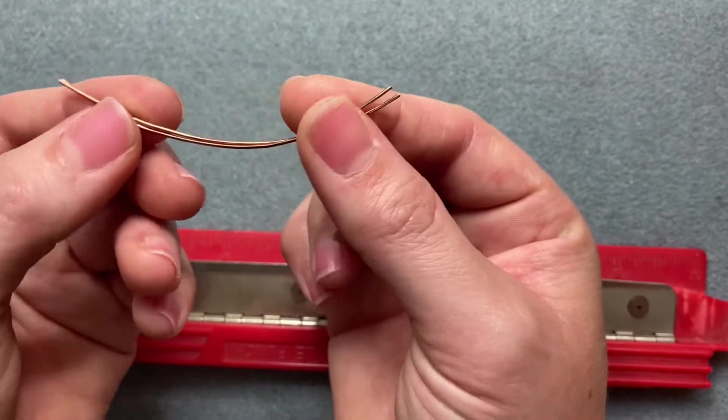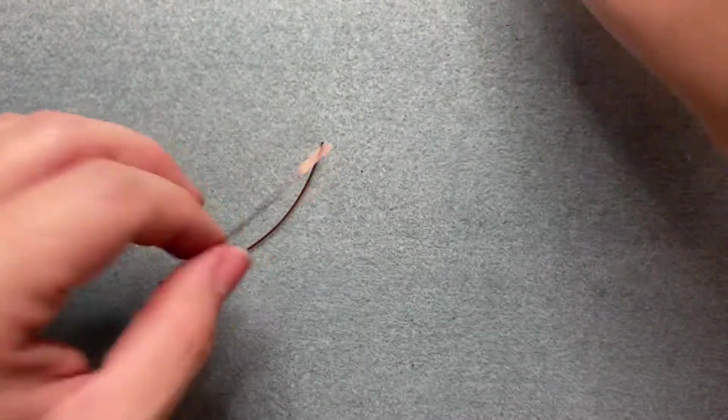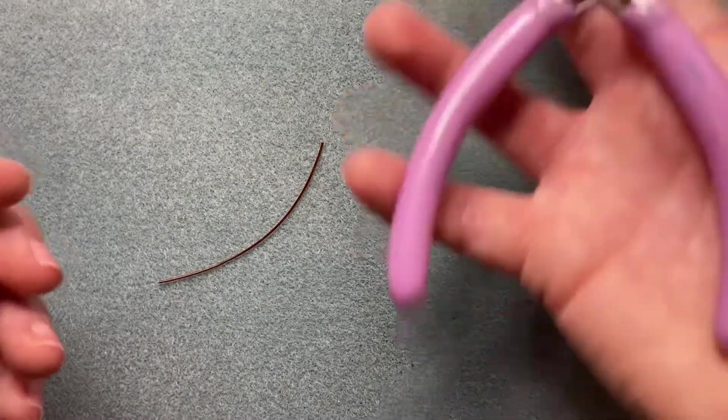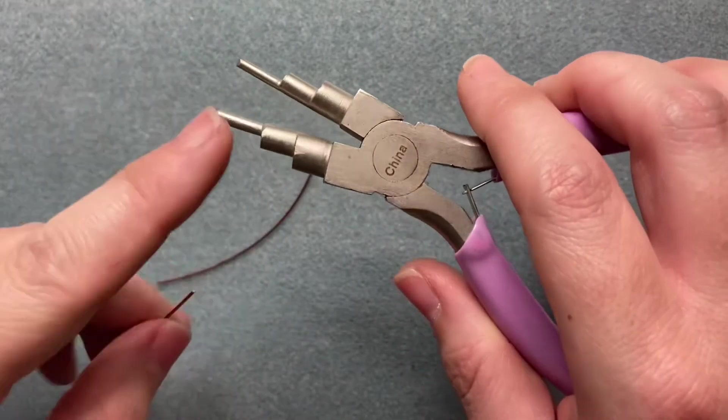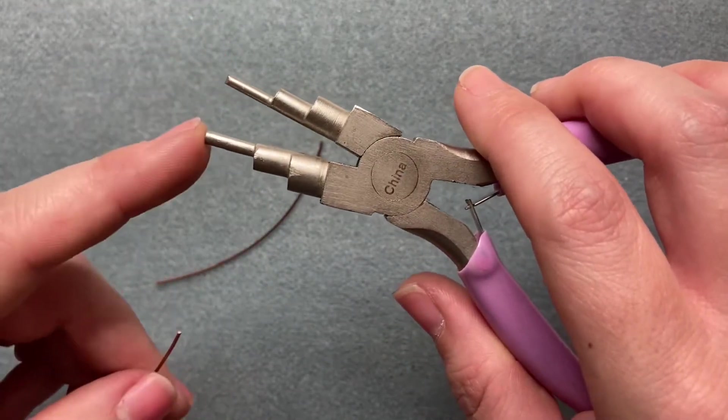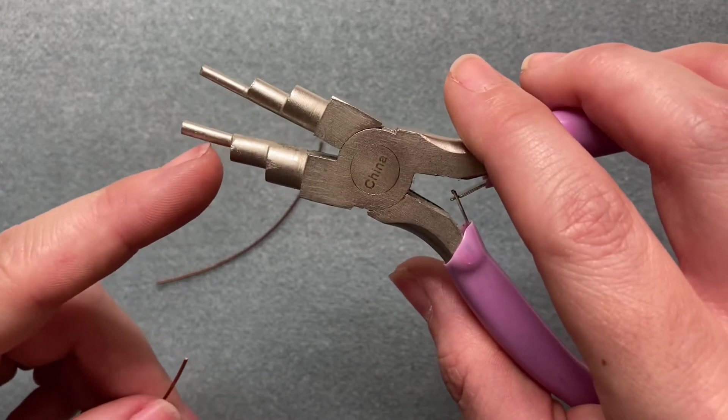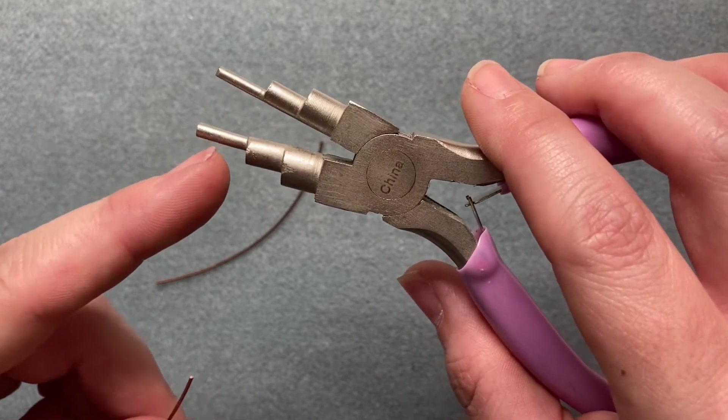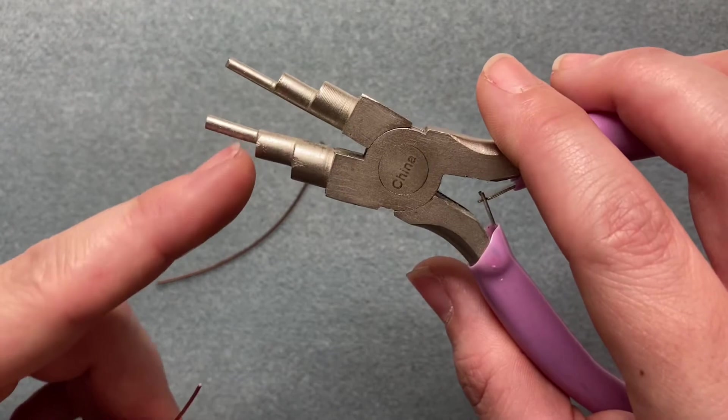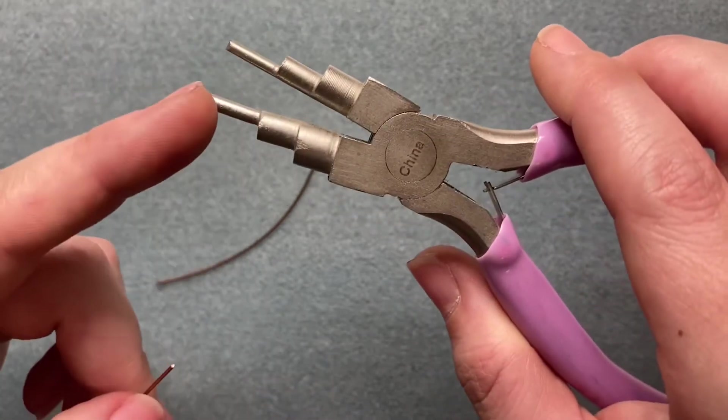Then you're going to take your bail shaping plier. The two tips, even though they look very similar to the naked eye, if you look closer this side is actually bigger than this side. So I want the bigger side, so I'm putting it on facing me.